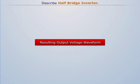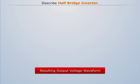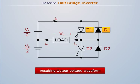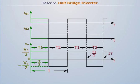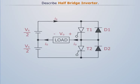Now let's discuss the resulting output voltage waveform. For cycle 0 to T by 2, thyristor T1 conducts. During this time the load is subjected to a voltage Vs by 2 due to upper voltage source Vs by 2.